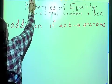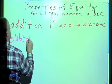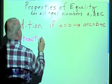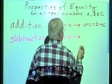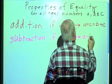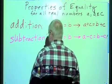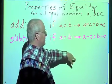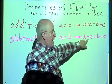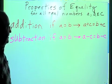Subtraction says the same thing, except we change the sign. If A equals B, then it follows that A minus C equals B minus C. And again, it simply says if two things are equal to each other, then it's not going to change the equation if I subtract the same quantity from both sides.